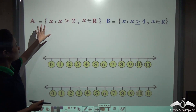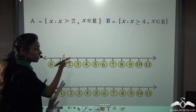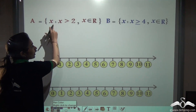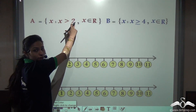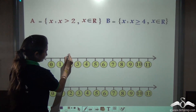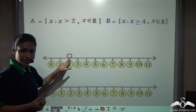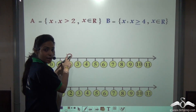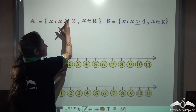We have taken out solutions for both A and B. Now let's plot them on a number line. First we will do it for A, where x is greater than 2 and x belongs to real numbers. Locate 2 on your number line. We make an empty circle here. Will I fill this circle? No, because there is no equal to sign. So do not fill this empty circle — x is greater than 2, not equal to 2.